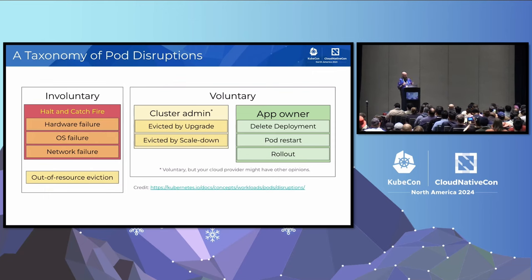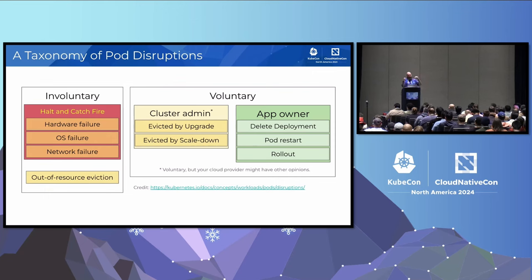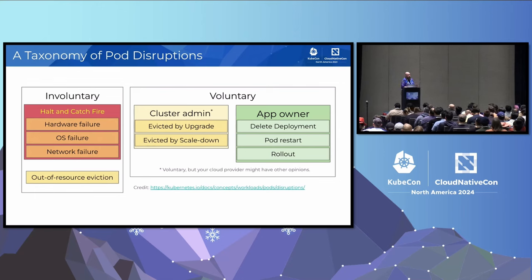Let's go through these in broad terms. I loosely categorize what the Kubernetes documentation calls involuntary disruptions into things like halt-and-catch-fire events: hardware failure, OS failure, network failure — anything that just stops your pods suddenly. Another thing in that involuntary category is out-of-resource evictions, and we'll talk about that in just a minute.